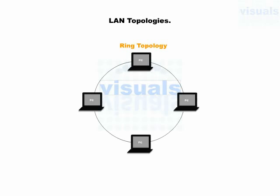Ring topology: under this topology, devices are connected with each other in such a way that each device can receive data from one link and transmit it on the other link. At the end, these devices form a shape of a ring. Token Ring 802.5 and FDDI 802.4 both implement this type of topology, which is ring topology.